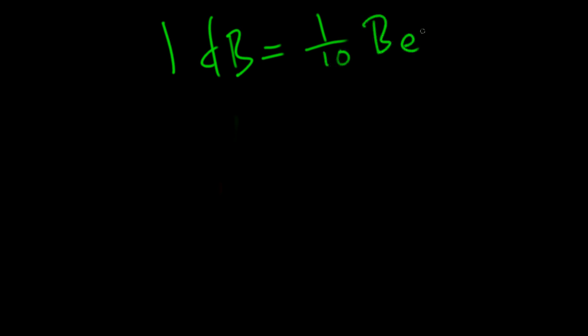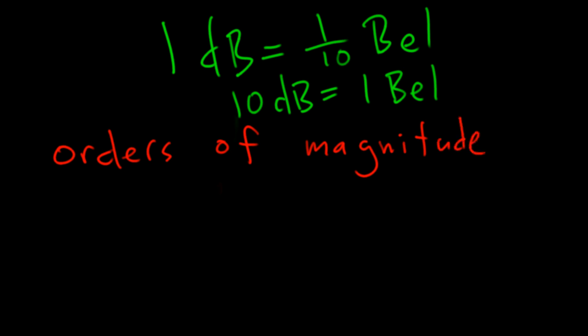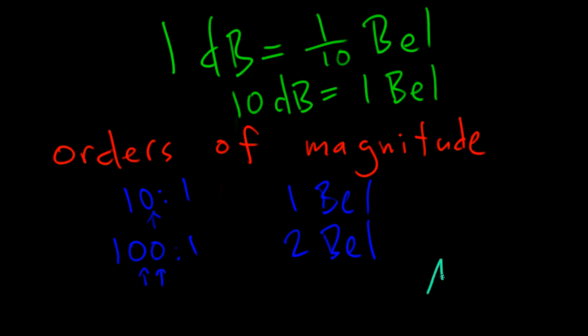I'm going to tell you the two fundamental things about decibels you need to know. The first is that one decibel is one-tenth of a bell—10 decibels (10 dB) equal one bell. A bell is a description of the number of orders of magnitude, or powers of 10, of a ratio. In mathematical terms, the ratio A over B equals 10 to the N, where N is the number of bells.